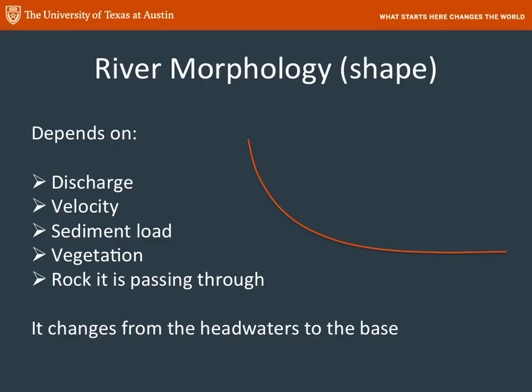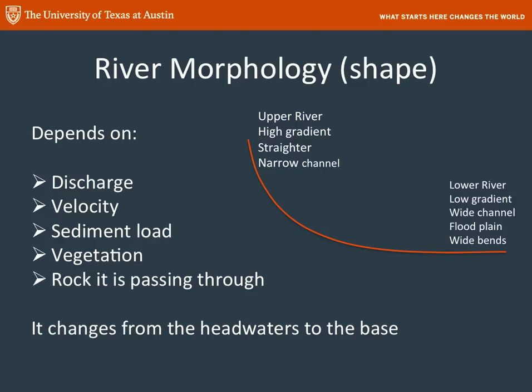We're going to focus now on what a river looks like — what shape does it take? This is a function of many things: the discharge, how much water is being moved; the velocity, how fast it's being moved; the sediment load; the vegetation; and the kind of rock it's passing through. The morphology of a river changes from its headwaters to its base. In the upper part, the gradient tends to be higher and the channel might be straighter and narrower. Closer to the base, the gradient is much lower, with a wide channel, big bends, and a developed floodplain.